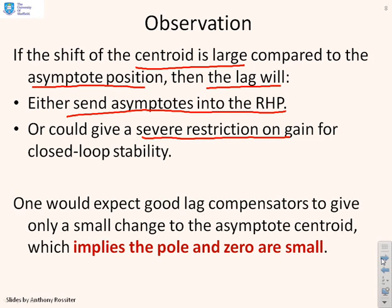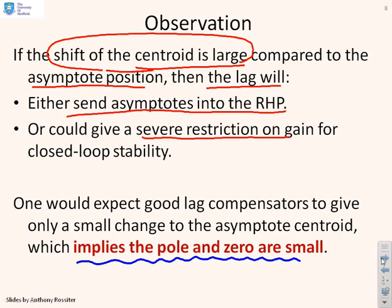So what do we learn from that? We learn that we don't want the shift of the centroid to be large, because that clearly is not a good thing. So how can we avoid making the shift of the centroid large? Well, the only way of doing it is by making the pole and zero small. Obviously, that's a relative term. But if the pole and zero are small, then the shift of the centroid is small. And then we can focus maybe on the other attributes of the lag, some benefits it might be able to give us.